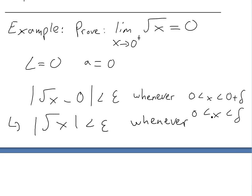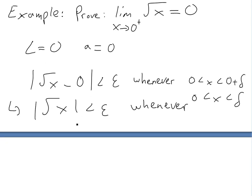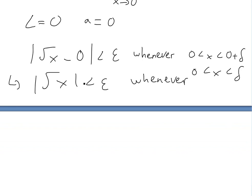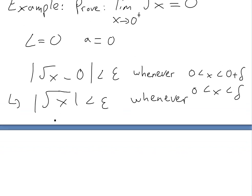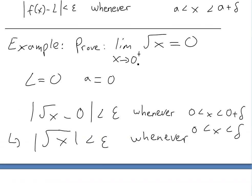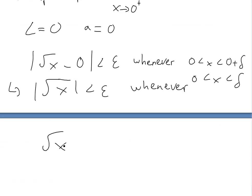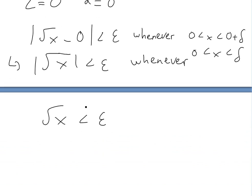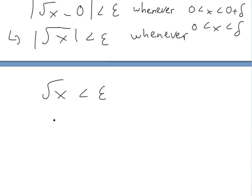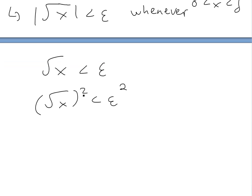Since we're dealing with real numbers, the square root must be positive inside. And since we're approaching from the right side, x is always positive, so √x is always positive. We can drop the absolute value: √x less than epsilon. Now if we square both sides, x is less than epsilon squared.